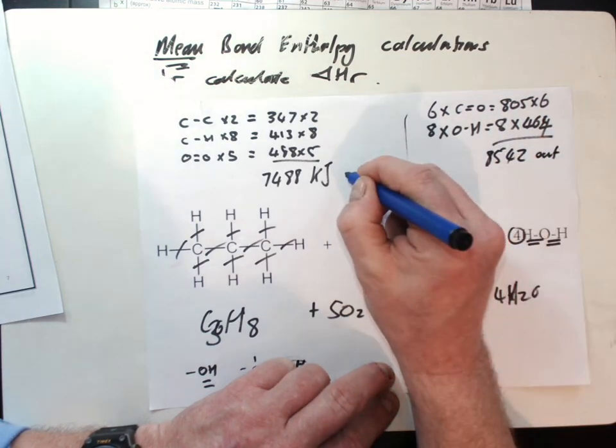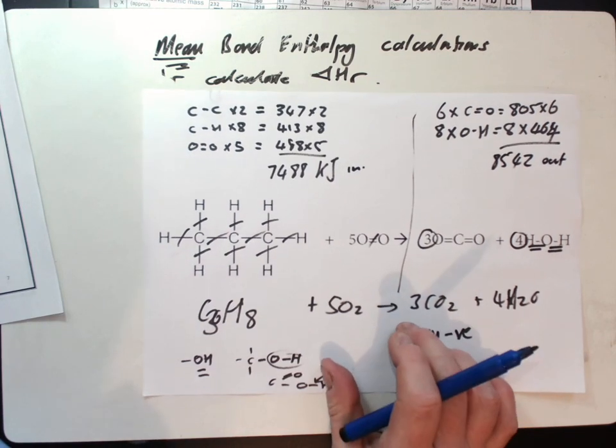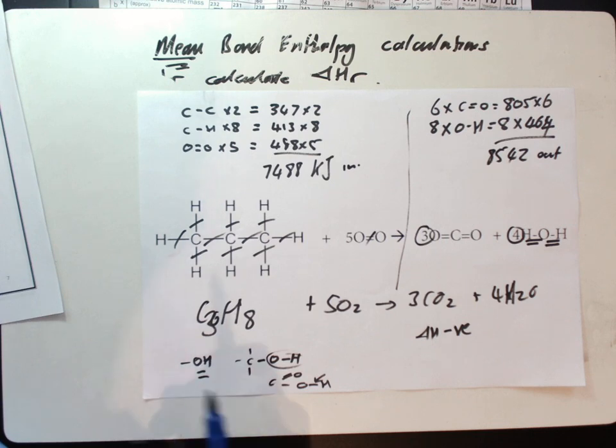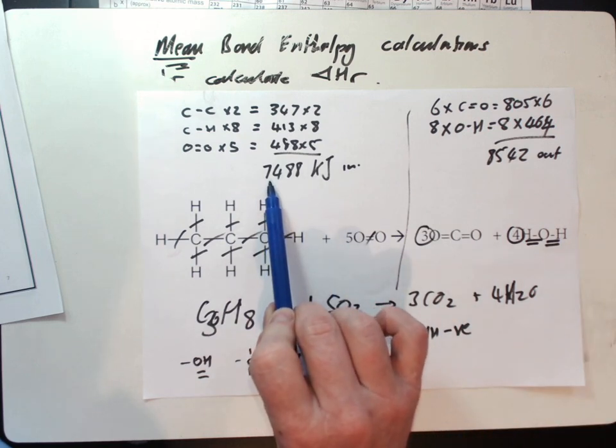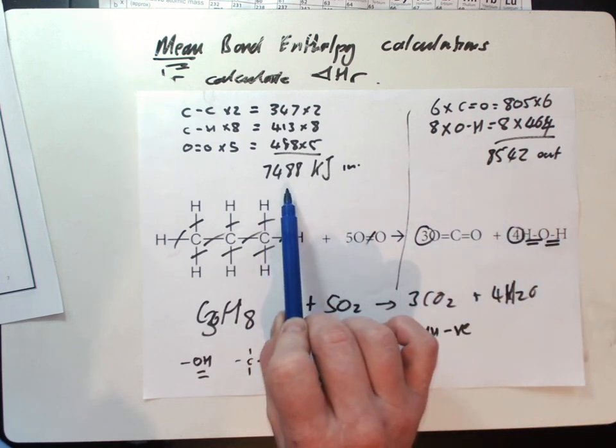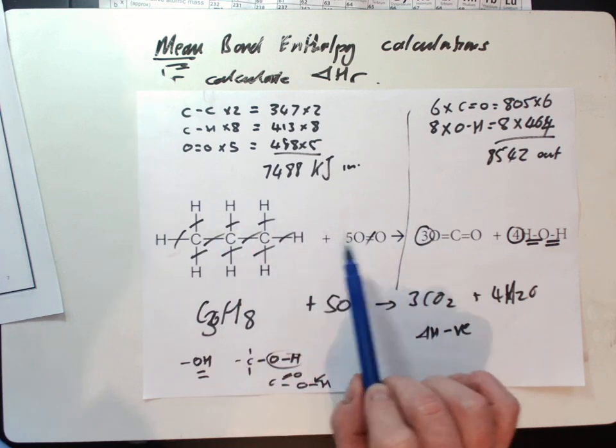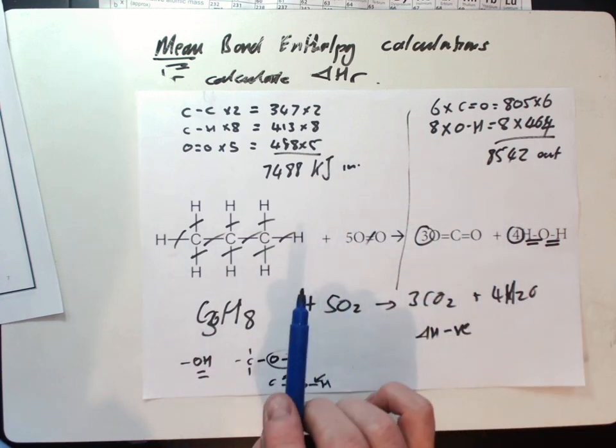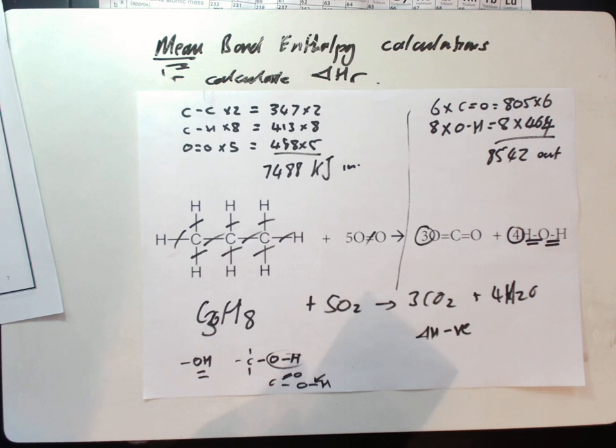That's the energy going out, and that's the energy coming in. I know this is a combustion question, and if it's a combustion question, I would expect a final answer of delta H being negative, illustrating that it's exothermic. Now what we've got here is more energy going out than coming in. Even if I didn't know it was a combustion question, I should know there's more energy going out than coming in, so it should be an exothermic reaction overall.